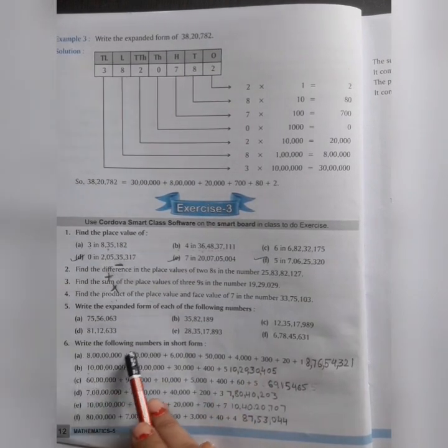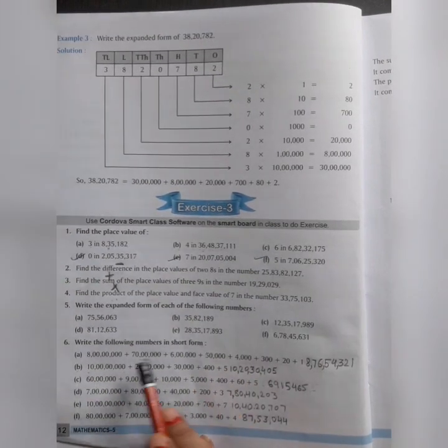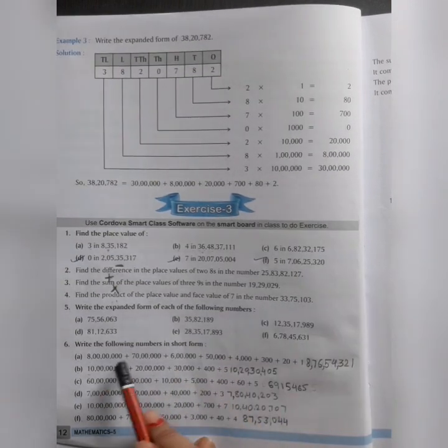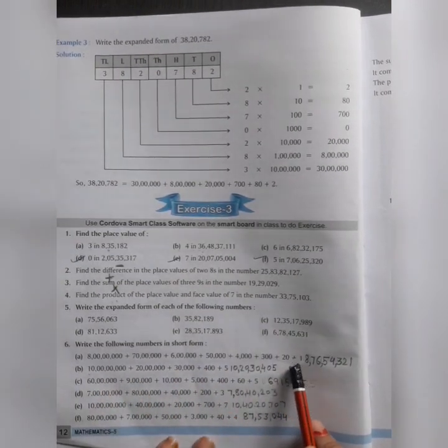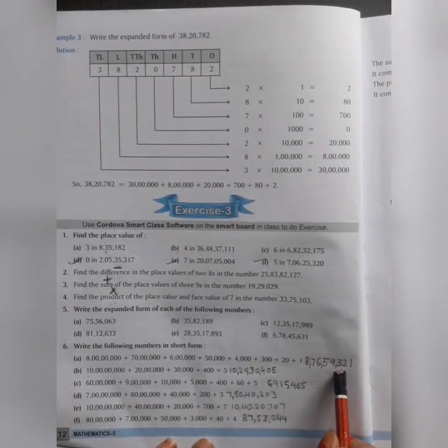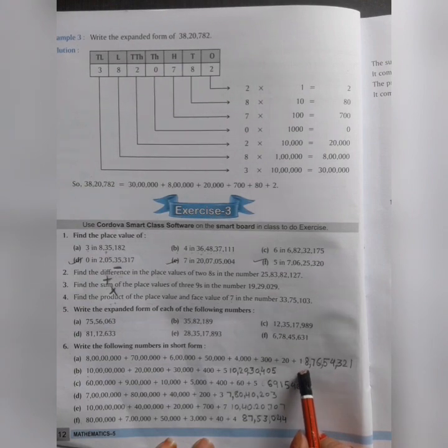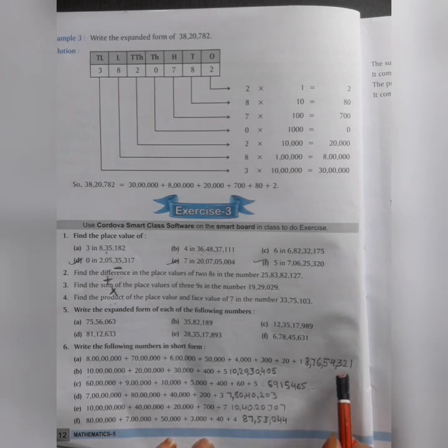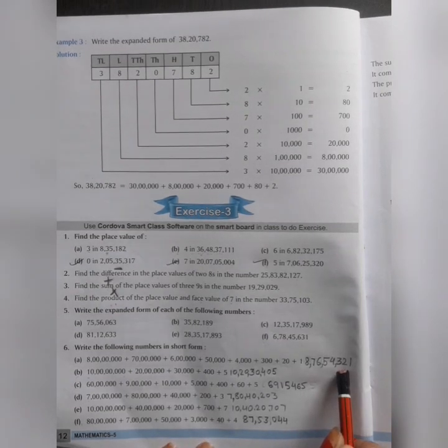Question number 6: Write the following numbers in short form. Now you have been given the expanded form. You have to convert to short form. When you add all these digits, our answer will be: One, tens, hundreds, thousands, ten thousands, lakh, ten lakh, 8 crore. 8 crore, 76 lakh, 54 thousand, 321.